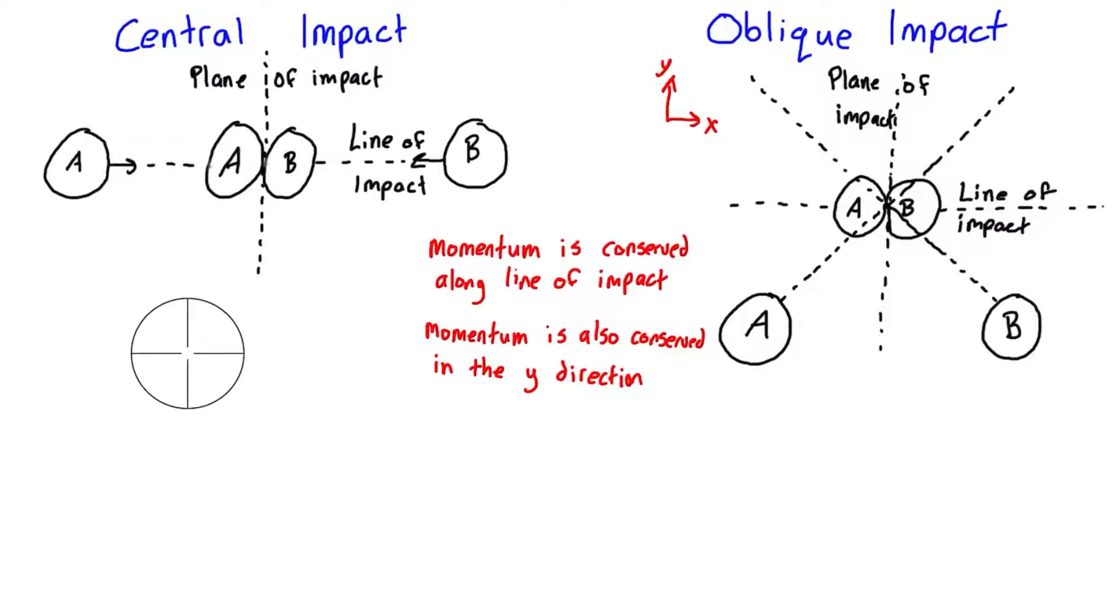In central impact problems we'll typically know the initial velocity of A and the initial velocity of B, and we'll be asked to find the final velocity after impact of each body. So that's two unknowns. We need two equations.